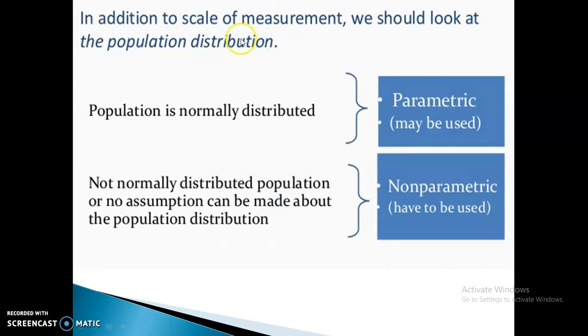In addition to scale of measurement we should look at the population distribution. So now this is again repeating the same thing that if population is normally distributed, parametrics may be used. If it is not normally distributed or no assumptions can be made about the population distribution, in that case we have to go for a non-parametric test.